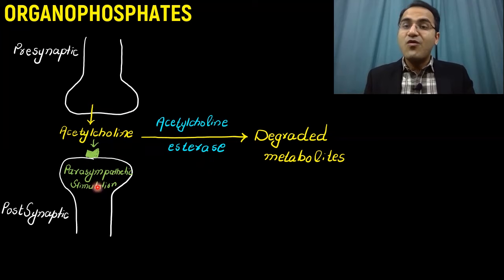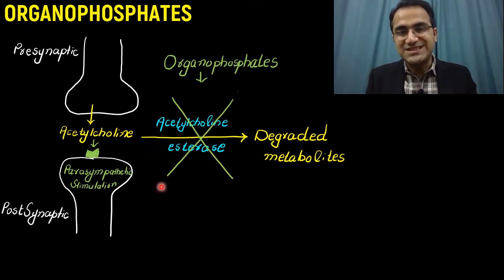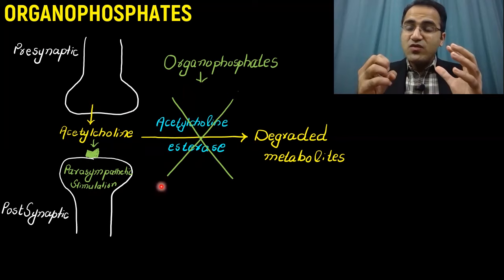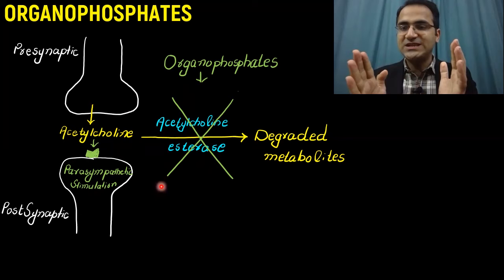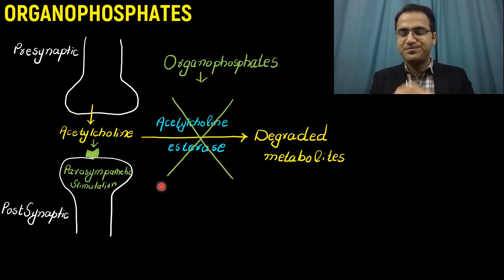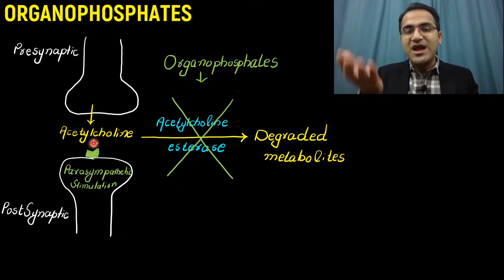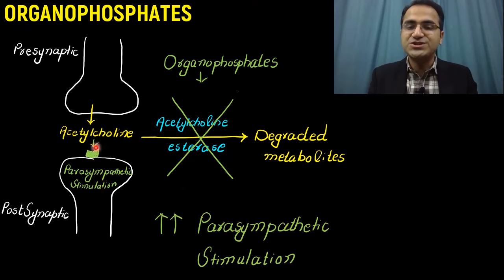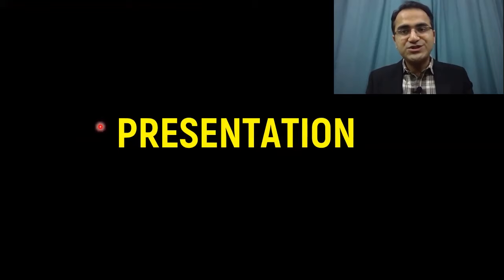What organophosphates do is that they block this acetylcholine esterase. They bind acetylcholine esterase and block it. First, organophosphates reversibly block it. Then after some time, aging takes place. After a few hours, the organophosphate binding to this acetylcholine esterase enzyme becomes irreversible. Inhibition of the acetylcholine esterase enzyme results in accumulation of acetylcholine in the neuromuscular junction, resulting in overstimulation and increased parasympathetic activity.